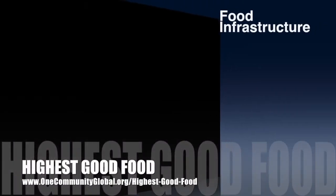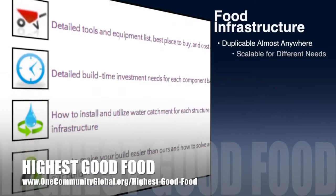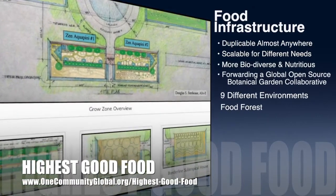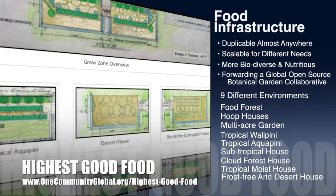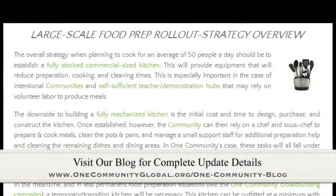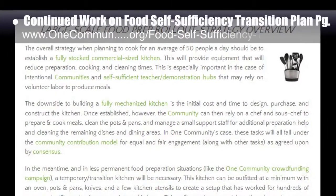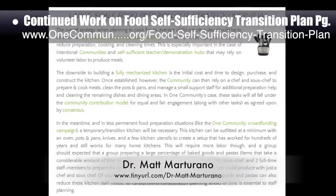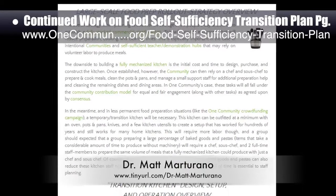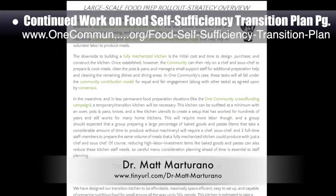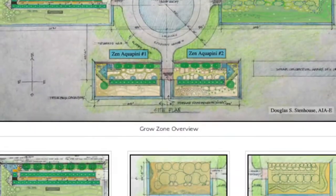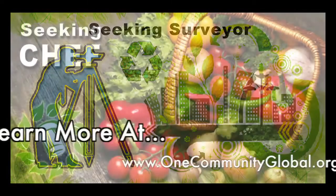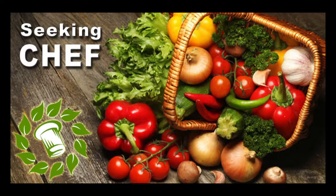OneCommunity's approach to highest good food is duplicable almost anywhere, scalable for different needs, more biodiverse and nutritious, part of forwarding a global open source botanical garden collaborative, and includes nine different free shared growing environments. This week, the core team completed another round of organizing the streamlined version of our food self-sufficiency transition plan page, which includes contributions from naturopathic doctor Matt Martorano, creator of the coherent model for comprehensive digestive health. An additional pioneer proofread and edited the page, now approximately 97% complete. We are seeking permaculturalists, an irrigation specialist, a surveyor, and a chef to join our team.